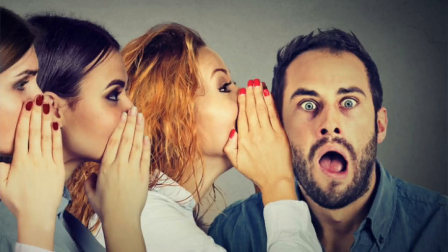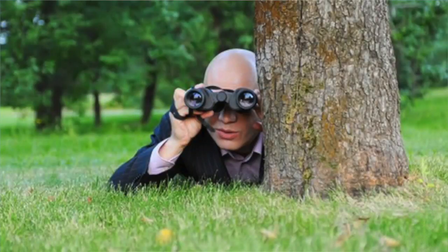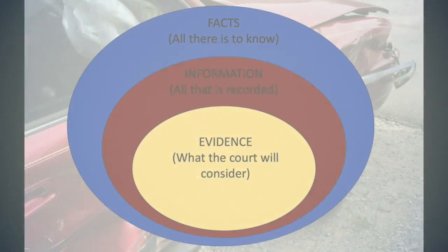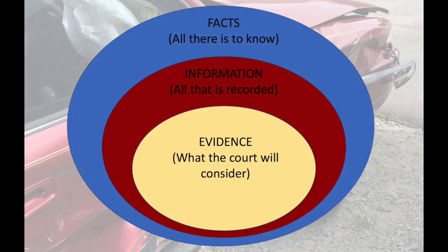For criminal matters, the role of the police will be to obtain as much information as they can about the incident. In civil matters, you will work with your client to obtain as much information as you can. Evidence represents those bits of the information which can be brought before the court. Not all information can be brought before the court — some might be second or third hand, some obtained covertly, some based on opinions, and some obtained unlawfully through threats or pressure. The court has a whole system of rules limiting the information that can be placed before it. So: facts are everything we could know, information is everything we do know, and evidence is everything we can show the court.